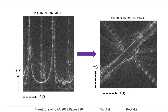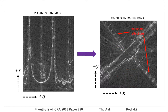The polar image can be converted to a Cartesian representation. This image clearly shows a wall and building. It also illustrates a few unwanted effects in radar returns, such as speckle noise and multipath reflections.